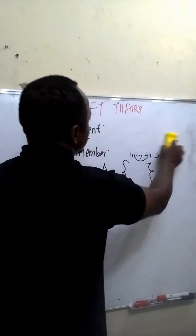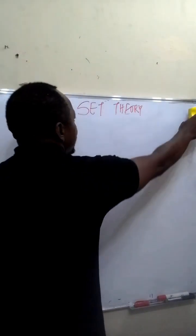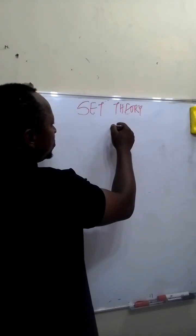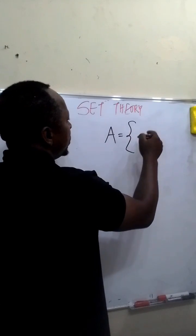For example, we may be asked to write a set of even numbers less than 10. Let's use A to represent the set, equal to our curly bracket.